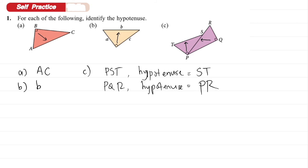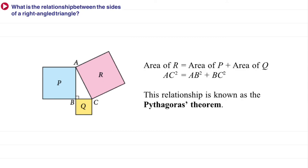That is how we identify the hypotenuse. What is the relationship between the sides of a right angle triangle? Consider a right angle triangle where each side has a square attached to it. Suppose the hypotenuse is AC — the longest side. If we extend it, it forms a square. When you find the area of that square, it is AC × AC, or AC squared.